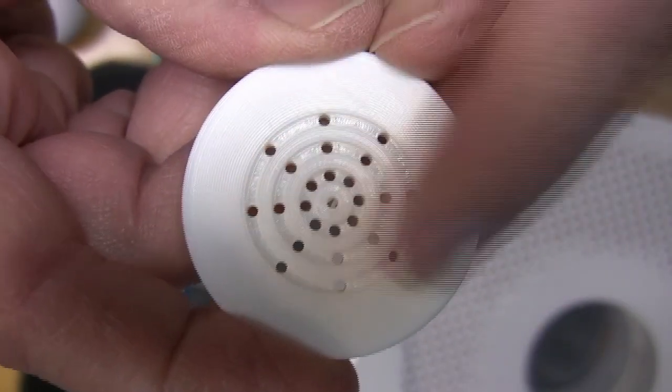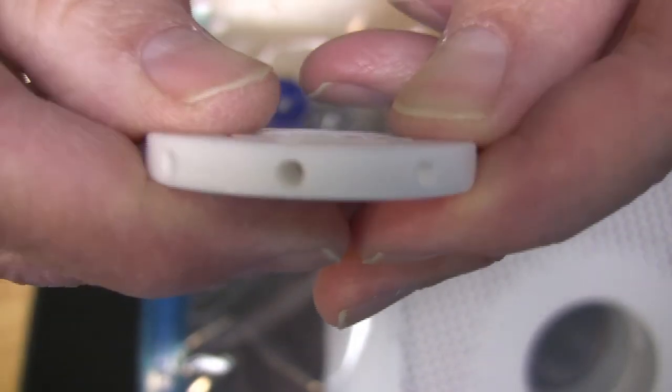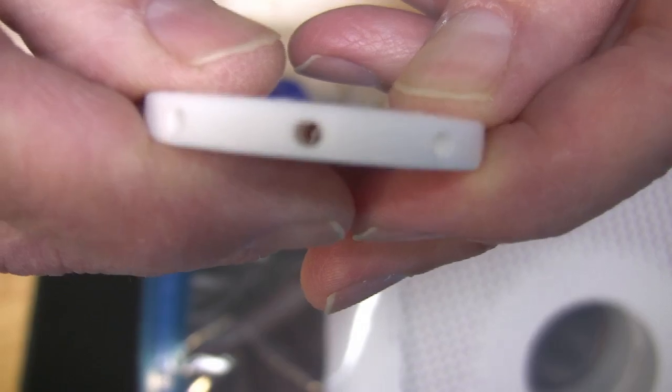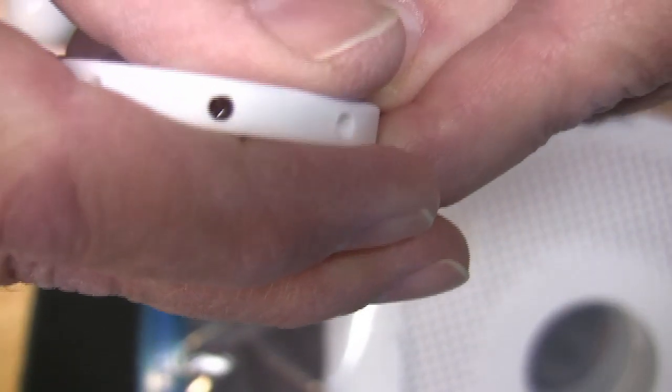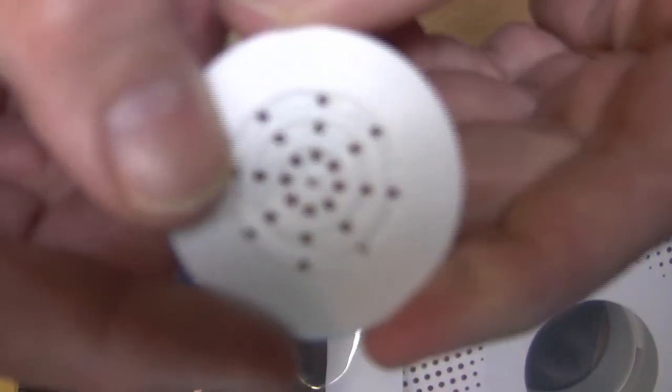So the holes that are on this surface are connected to the holes that are on the periphery, like around the shape of the disk. The holes go all the way through. Everything's connected. All the holes are connected to at least one hole on the side.